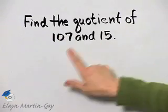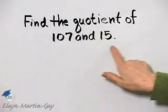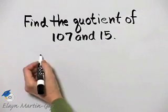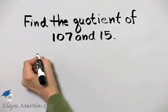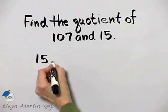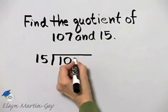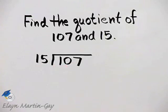So if I'm finding the quotient of 107 and 15, I want to know how many times does 15 divide into 107? I'm finding the quotient of 107 and 15. So let's divide.